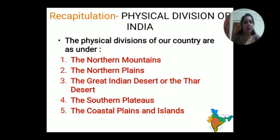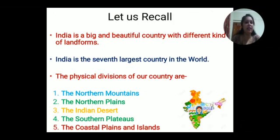Now we can discuss the physical divisions of our country India. The physical divisions are: the northern mountains, the northern plains, the great Indian desert or the Thar desert, the southern plateaus, the coastal plains, and the islands. All these are part of the physical features of our country India. To summarize: India is a big and beautiful country with different kinds of landforms - mountains, rivers, hills, and plateaus. India is the seventh largest country in the world.